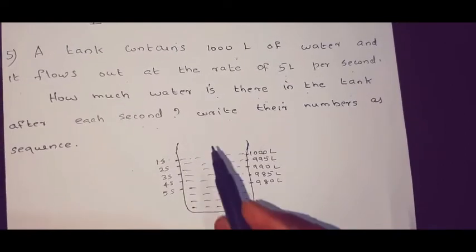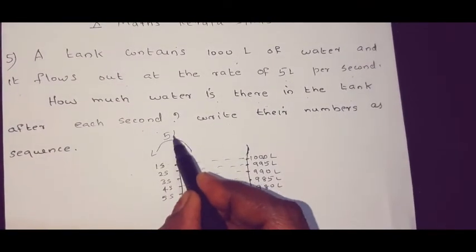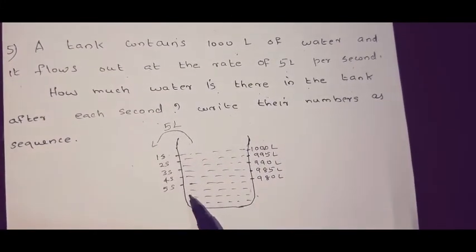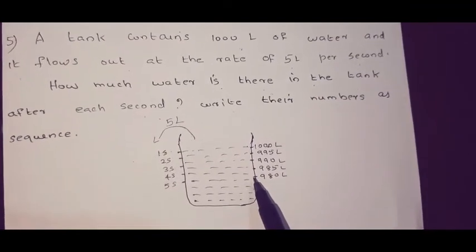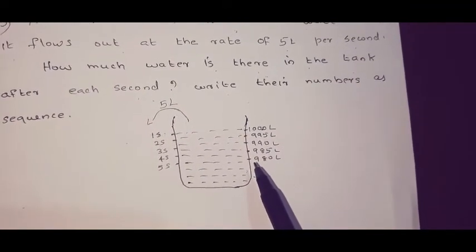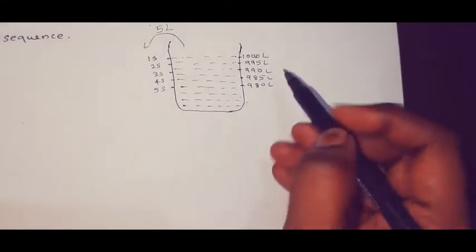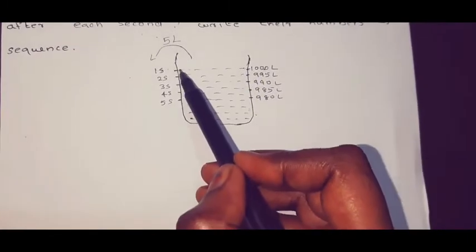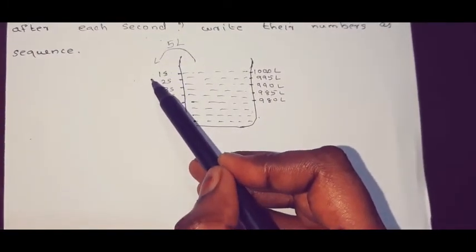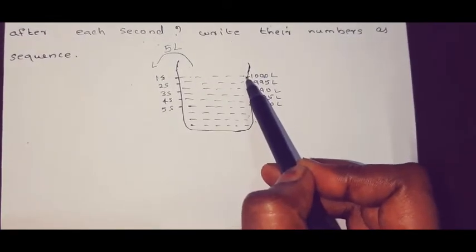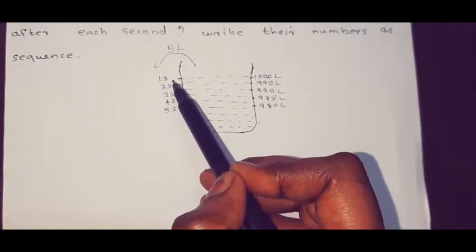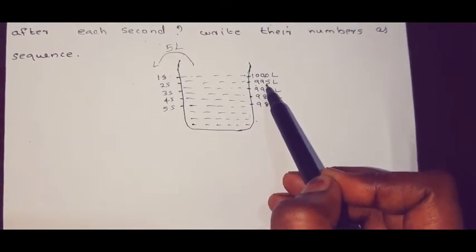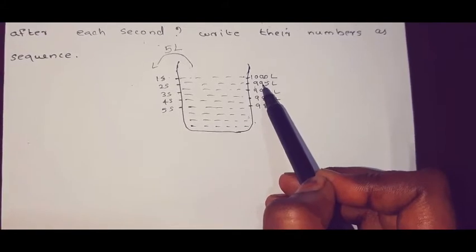Let's take a look at the picture. So this is the image that we are using. 1000 liters, 950 liters, 900 liters, 850 liters. 1000 liters in 5 seconds. 1000 liters, 995 liters, 990 liters.